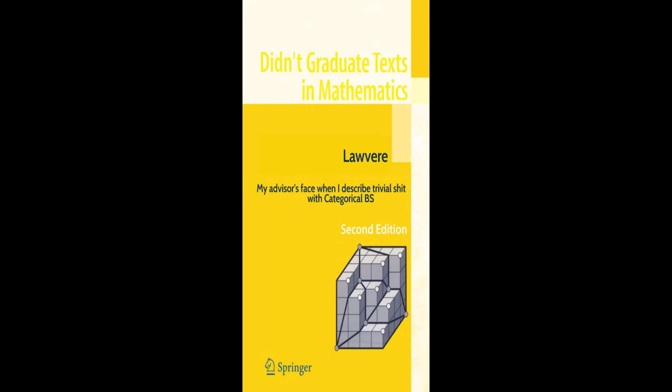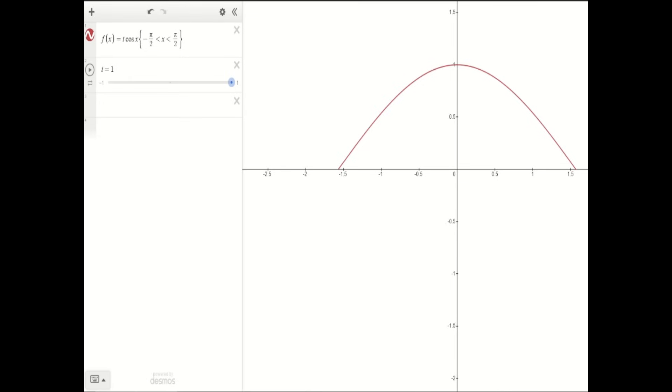Basically, the idea behind homotopy theory is that we only care about continuous maps that can be transformed into other continuous maps over time. For example, we can transform this function, defined as a curve in two-dimensional space, into this other curve.